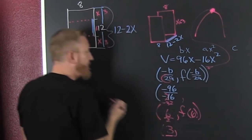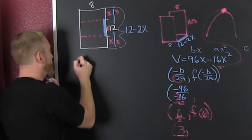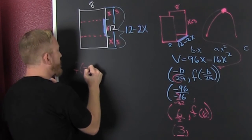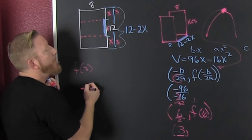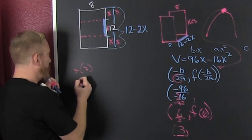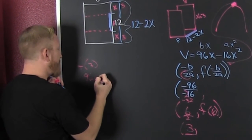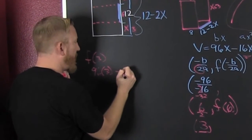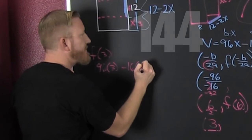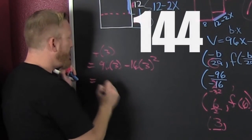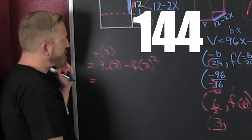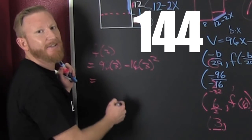So then if I was trying to find that maximum volume, I'd be looking for F of three. I don't know if this problem even asked for that, but my volume is given to me by that. That's 96 times three minus 16 times three squared, and big numbers. That's the stuff I don't like. You finish.